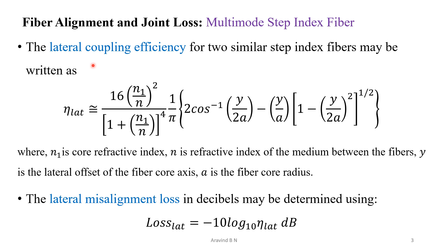For multimode step index fiber, the lateral coupling efficiency for two similar step index fibers is given by: eta_lateral ≈ 16 × (n1/n)² / (1 + n1/n)⁴ × (1/π) × [2cos⁻¹(y/2a) − (y/a) × (1 − (y/2a)²)^(1/2)], where n1 is the core refractive index, n is the refractive index of the medium between the fibers, y is the lateral offset of the fiber core axis, and a is the fiber core radius.